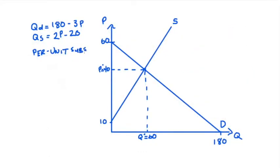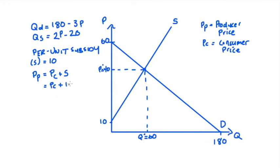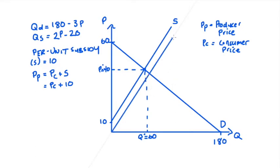Now let's think about the subsidy. The government gives producers $10 per unit traded. The overall price the producer receives, PP, equals the amount the consumer pays (PC) plus the subsidy: PP = PC + 10. This subsidy shifts the supply curve down by exactly $10, because the minimum price needed to incentivize production has decreased by 10. You can also think of it as a decrease in marginal cost.